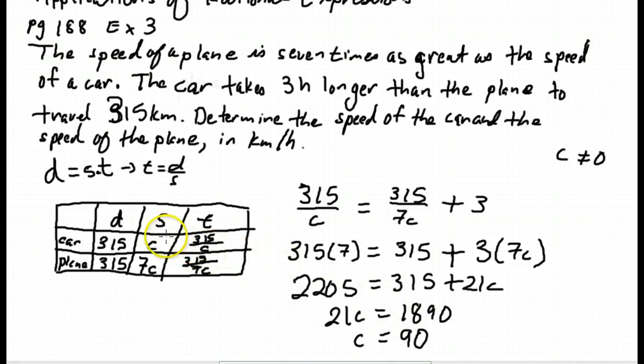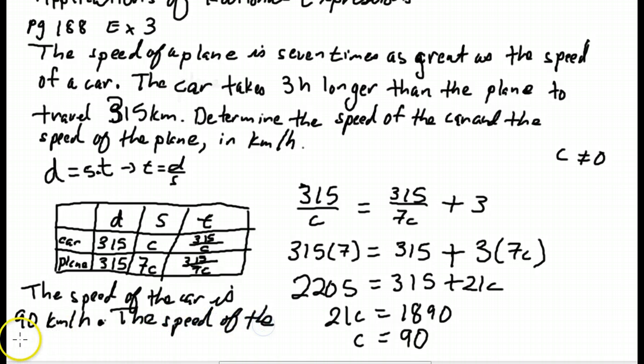What is C? C is the speed of the car. And the speed of the plane will be 7C. So let's write this out. The speed of the car is 90 kilometers per hour. The speed of the plane is 7 times that, 630 kilometers per hour.